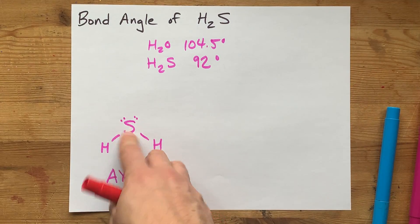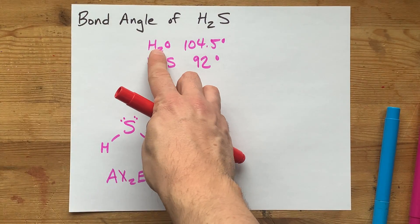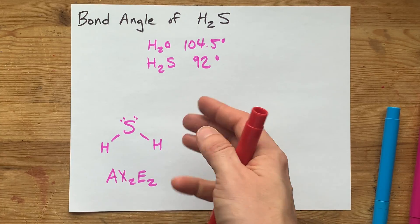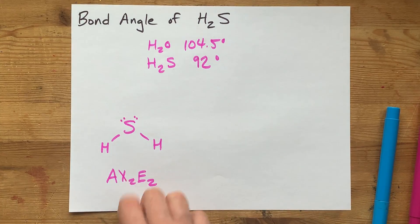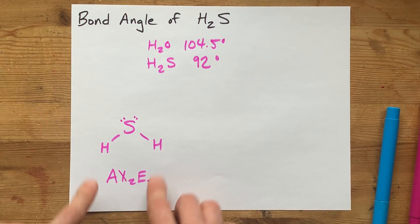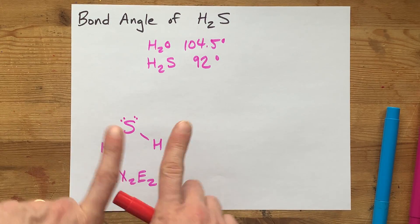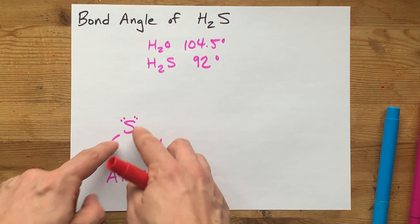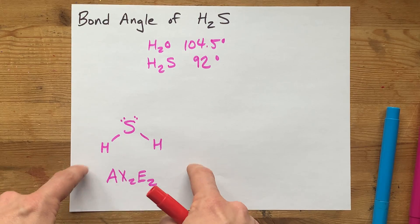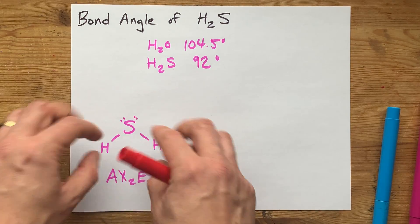But sulfur is larger than oxygen. If you want to think about this visually, you can say to yourself, well, S is larger, which means these two Hs, which are the same size they always are, are already further apart from each other because the central thing is bigger.